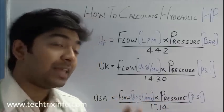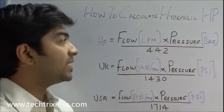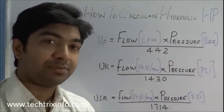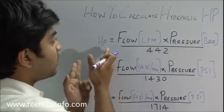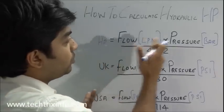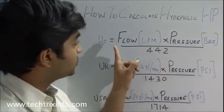So these are the formulas to calculate the hydraulic horsepower. Let's do it right now. So this is the basic formula: hydraulic HP equals flow times pressure divided by a constant 442. So flow is the flow of the oil in the hydraulic system coming from the hydraulic pump.